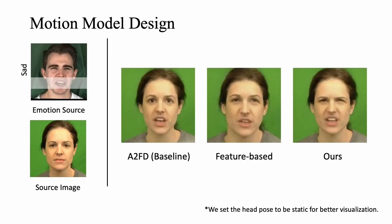We conduct ablation studies to demonstrate the effectiveness of our architecture. We first design experiments to evaluate our motion model design. Here are the results using only the audio-to-facial dynamics module and a feature-based motion model by representing emotion dynamics at the feature space. Note that the feature-based variant is designed to explore whether the emotion pattern can be represented as a feature instead of the displacement manner.